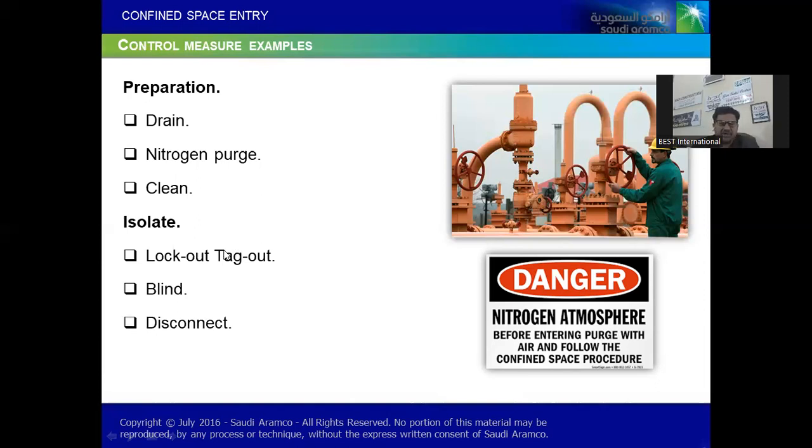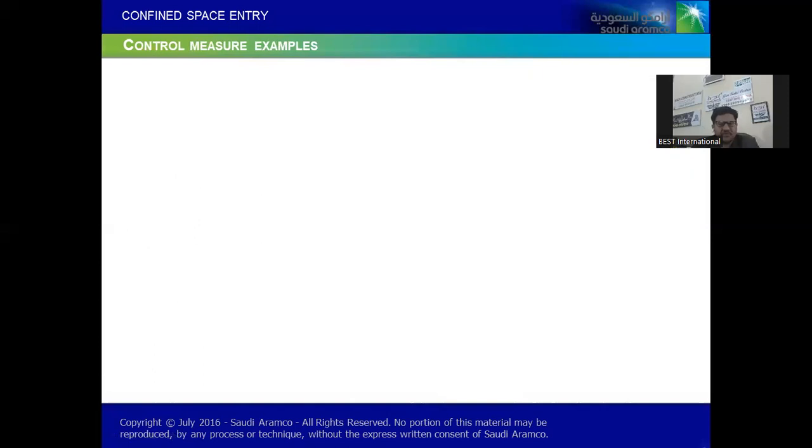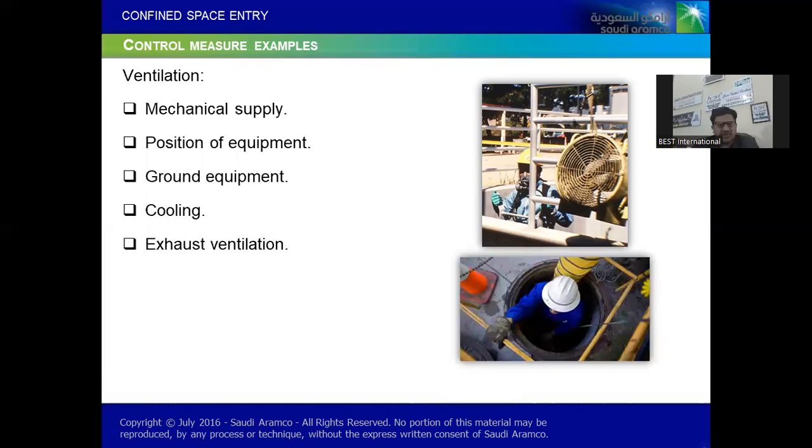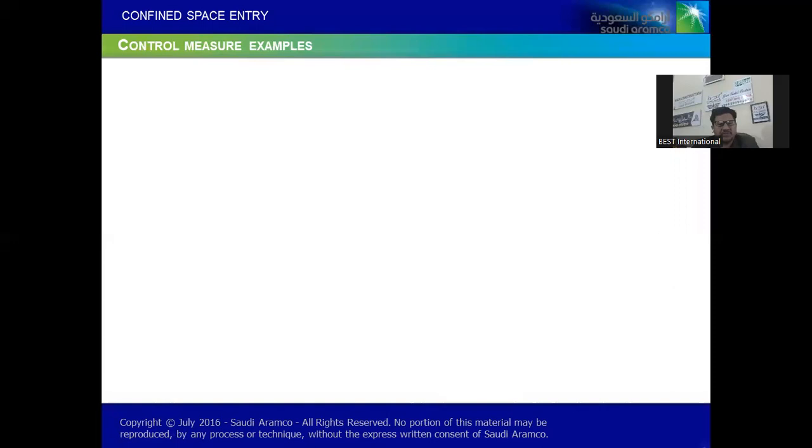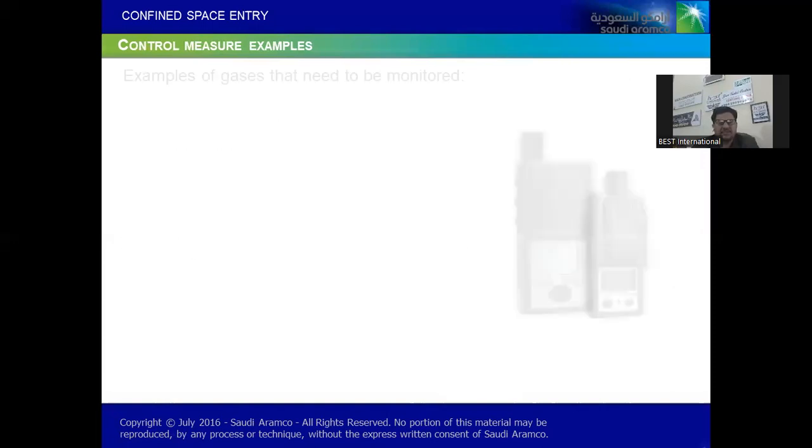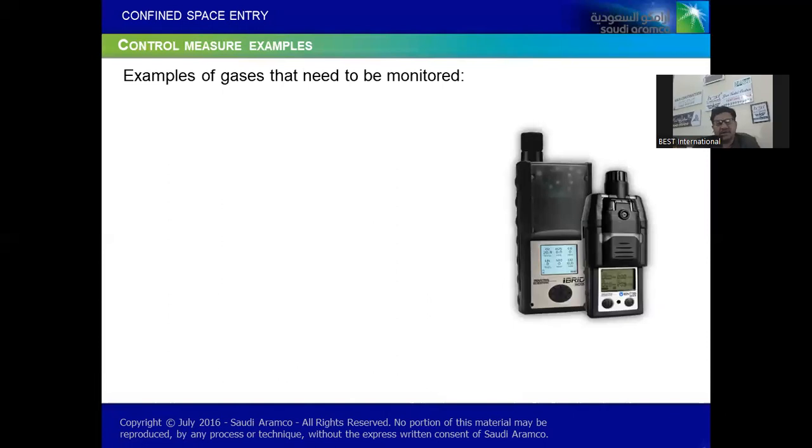Few more examples of controls - ventilation could be mechanical supply, position of equipment is important, ground equipment, and also exhaust ventilation, natural ventilation. These are some of the control measures examples of ventilation. And also examples of gases that have to be monitored, and minimum four elements surely we have to monitor, especially the oxygen level.